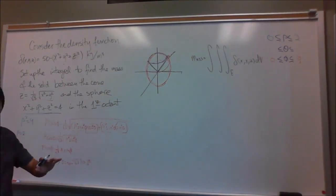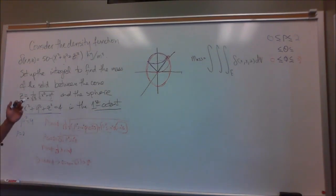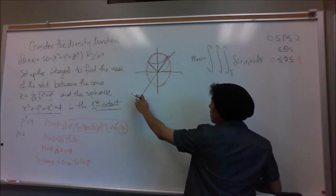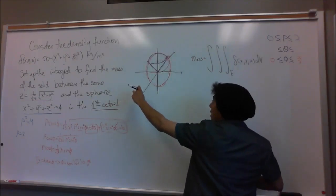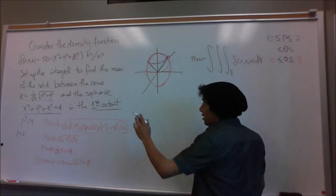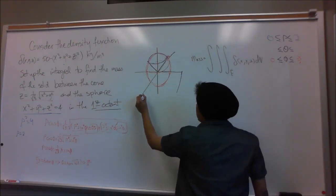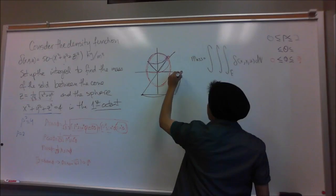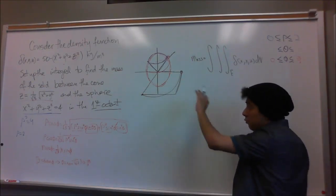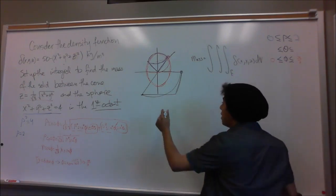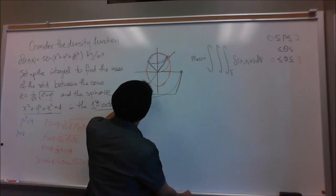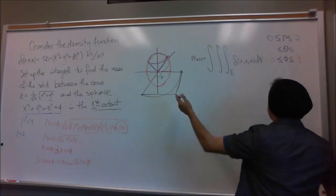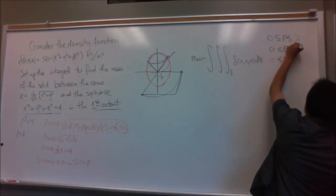For theta, we look at the first octant. Theta travels along the xy-plane and normally goes from 0 to 2 pi around the full plane. But in the first octant, we only want one quarter of that rotation — from the positive x-axis to the positive y-axis — which is an angle of pi over 2. So our limits for theta are 0 to pi over 2.